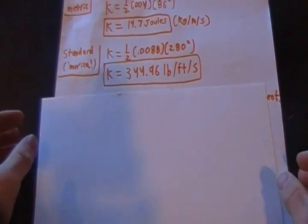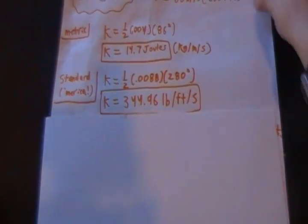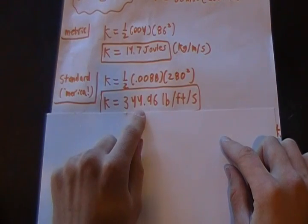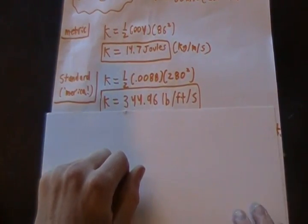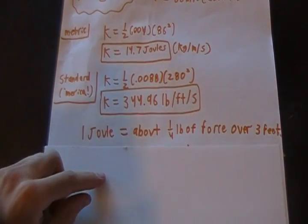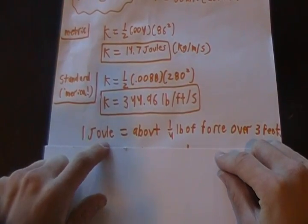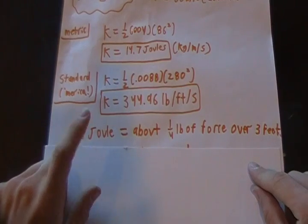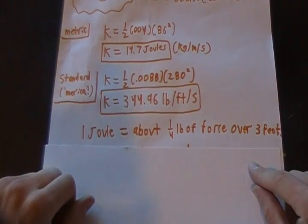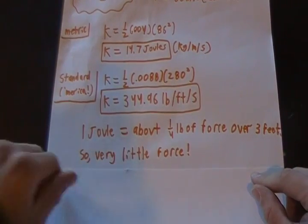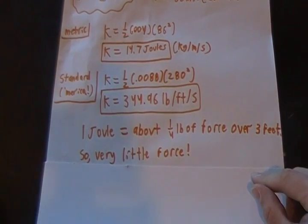Standard, or the American version, that's going to be 344.96 pound feet per second, which really isn't that much. One joule, which this should read newtons, not joules... actually, this is correct, it's a joule. But, it's about a quarter pound of force over three feet, which really is not that much force.